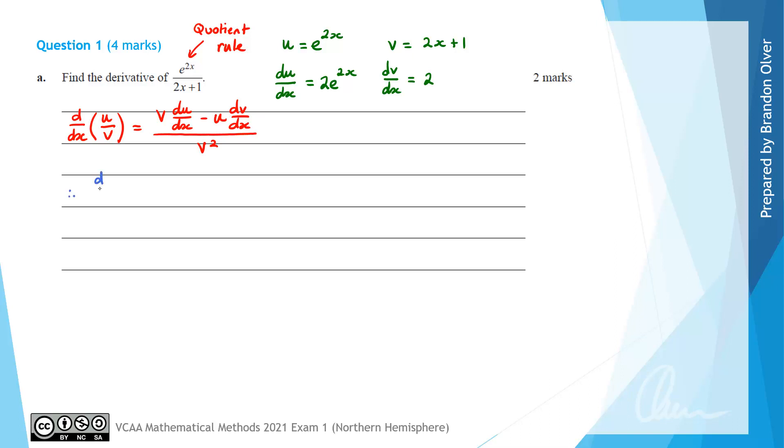Therefore, to calculate the derivative, which I can represent as d/dx of e^(2x) divided by (2x + 1), we simply take the v function, which is (2x + 1), and we put that in brackets. And we want to multiply that by du/dx, which was the 2e^(2x) that we found before.